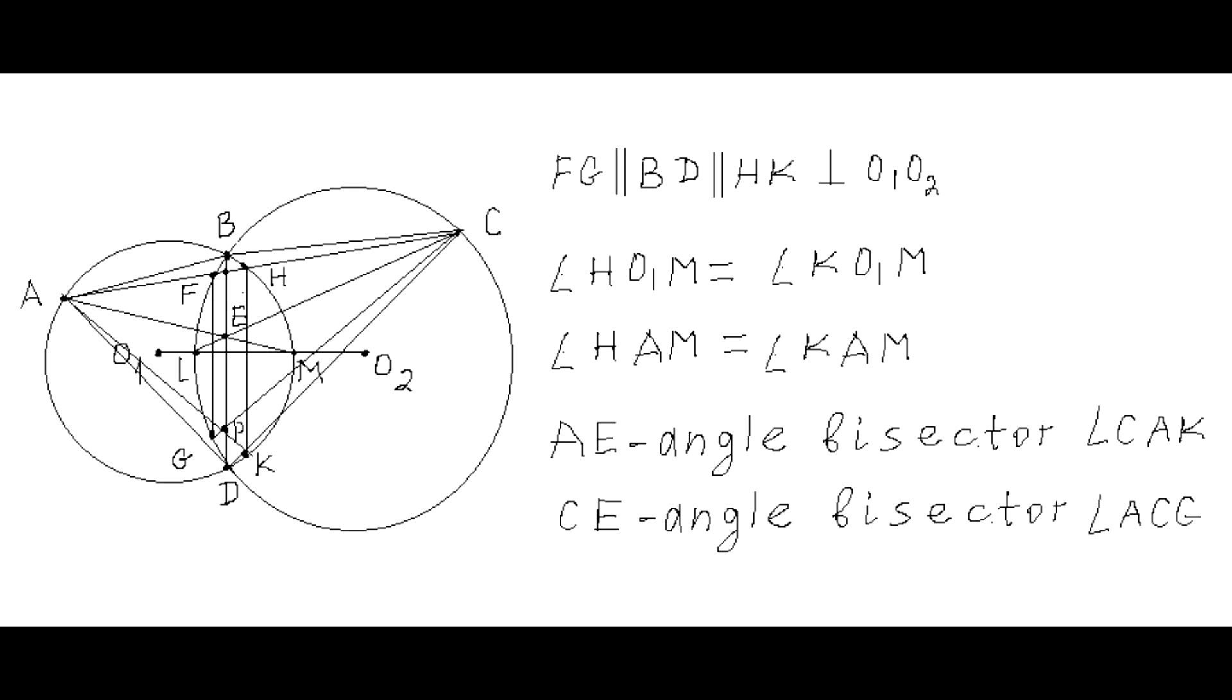The proof in that video lesson uses the fact that point P of intersection of line segments AK and CG lies on segment BD. This is based on the observation that pairs of points H and K and F and G are symmetric